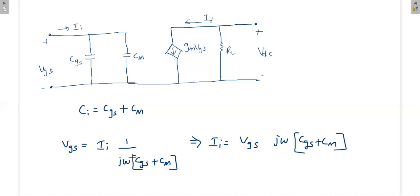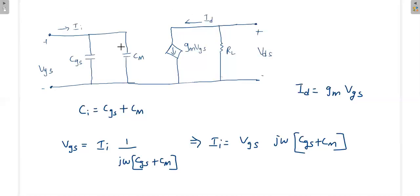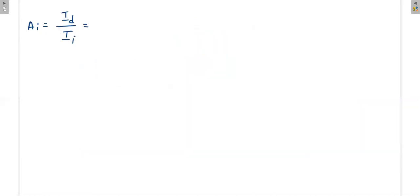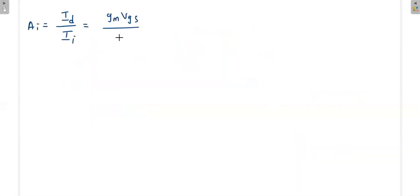From this, the input current II = VGS · jω(CGS + CM). The drain current ID = GM · VGS. The current gain AI = ID / II = GM·VGS / (jω·VGS·(CGS + CM)). After canceling VGS, the current gain magnitude is |AI| = GM / (ω·(CGS + CM)).